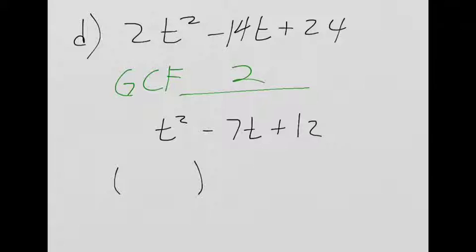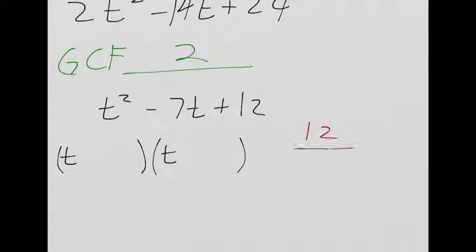So, 2 factors that do what? Add to negative 7, multiply to positive 12. Good. Add to negative 7, multiply to positive 12. What are my options? 1 and 12. What else? 3 and 4. 2 and 6. Which ones are going to work?